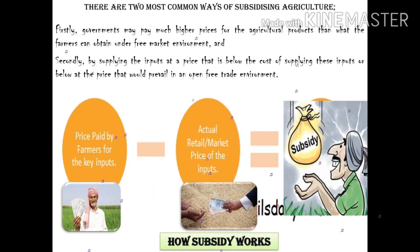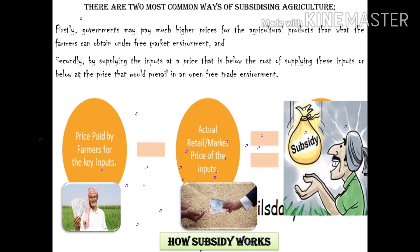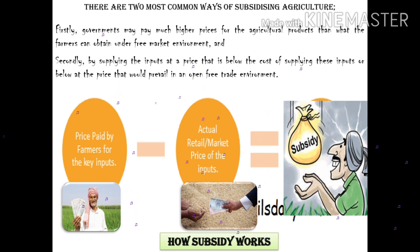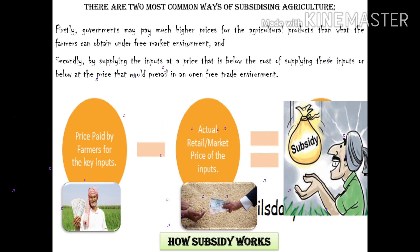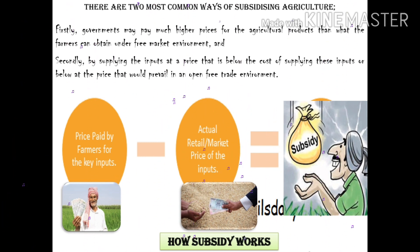For example, if the actual price in the market is 200 rupees and the farmer pays 500 rupees, then 500 minus 200 gives a balance of 300 rupees. That 300 rupees is the government's subsidy for agriculture.